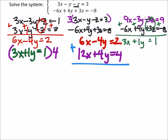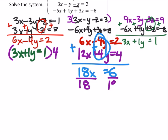So then when I add these, they should eliminate. Six x plus twelve x is eighteen x. Negative four y plus four y is zero. This is going to equal six. Now when I divide both sides by eighteen and simplify, I get x is one third.